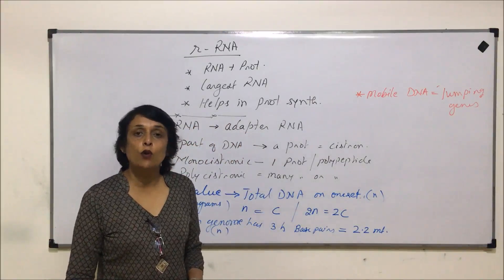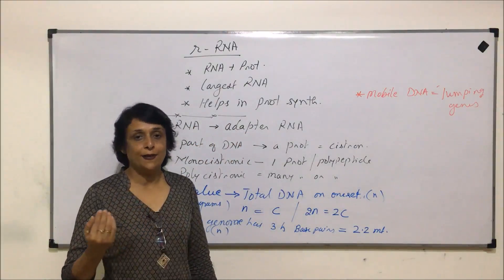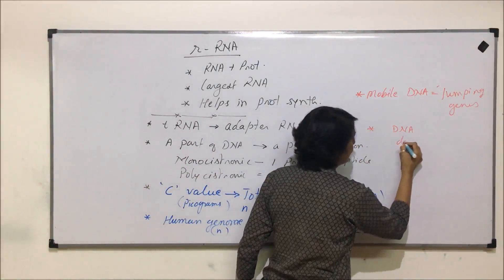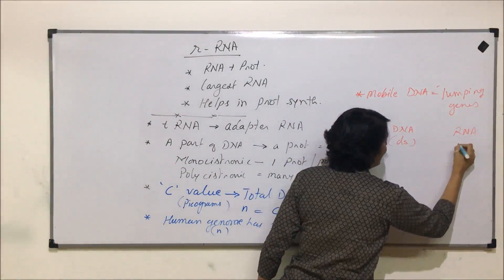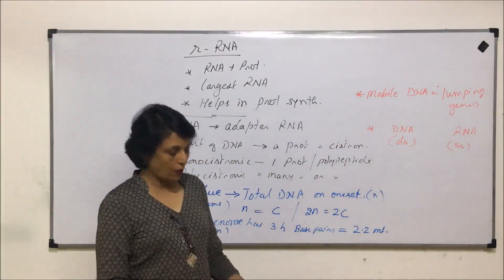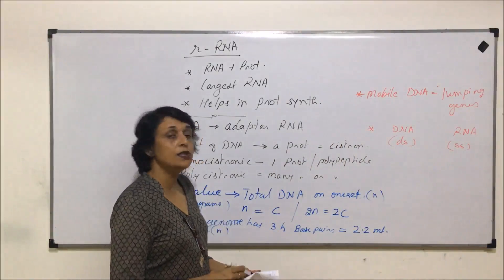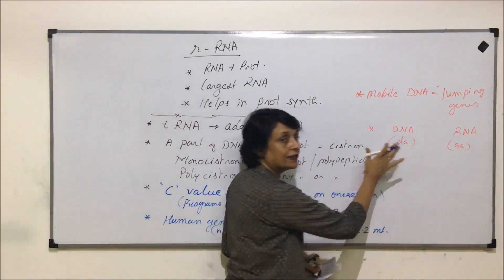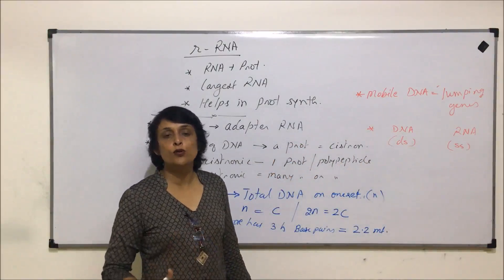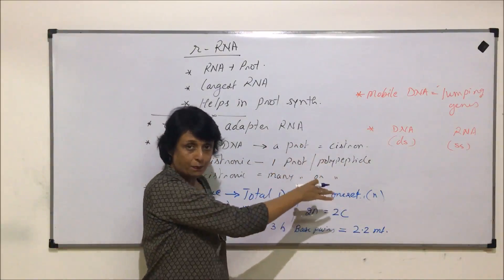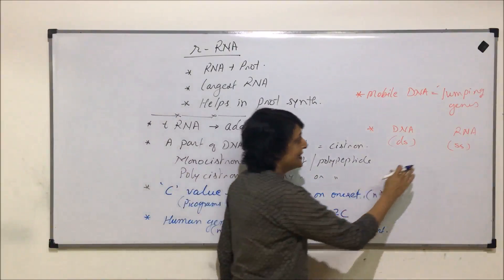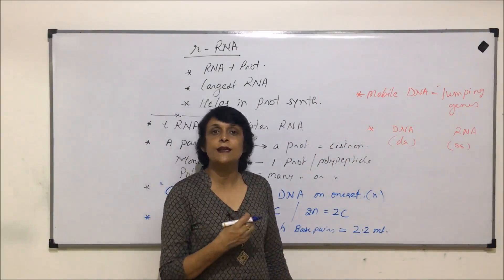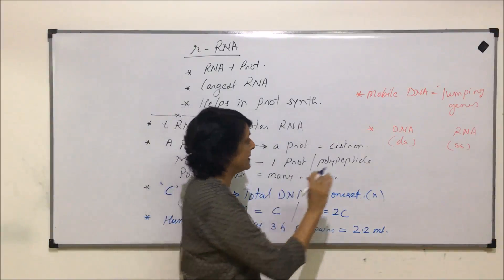One more thing we said we will discuss later was about the normal DNA type and RNA type and the variations. Normal DNA is double-stranded. Normal RNA is single-stranded. This we have already discussed. Now we are talking about certain exceptions in which DNA is single-stranded and RNA is double-stranded. Where do we find this normal thing? Normal double-stranded DNA is the most common type of DNA found in almost all except those exceptions which we will be discussing. Single-stranded RNA is again a common thing. The RNAs which are present in most cells are single-stranded RNAs.